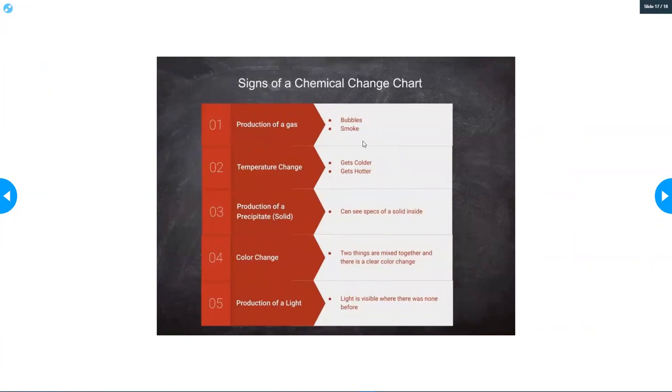Signs of a chemical change chart. Production of a gas. You're going to want to copy this down. I will put it in the folder. Production of a gas. You'll see bubbles or smoke. A temperature change. The two things being mixed get hotter or colder without actually heating them up. Production of a precipitate or solid. You can see specks of a solid inside whatever you're mixing. Color change is when two things are mixed together and there is a very clear color change. Production of a light. Light is visible where there was none before.